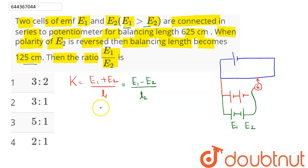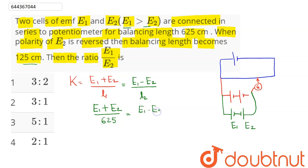We need to find the ratio e1 to e2. So we have: (e1 plus e2) divided by balancing length l1 of 625 is equal to (e1 minus e2) divided by balancing length l2 of 125.